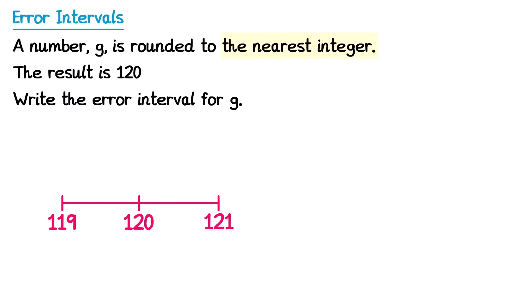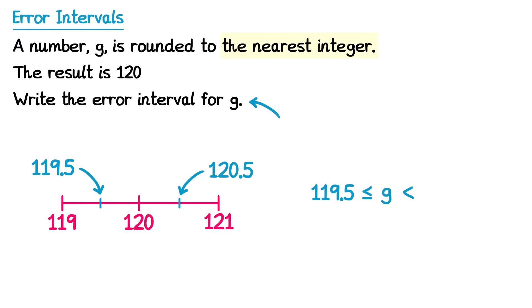Then we find the numbers halfway in between these: 119.5 and 120.5, and then form the error interval using the letter G. So G, the inequality symbols, the lower bound 119.5, the upper bound 120.5.